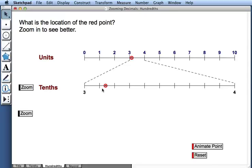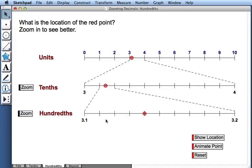So perhaps my point is at 3 and 13 hundredths. That's my new guess. Well, let's zoom in one more time. So now we're zooming between 3 and 1 tenths and 3 and 2 tenths. And I see that the actual location is 3 and 14 hundredths.